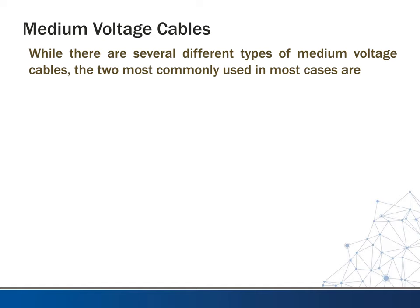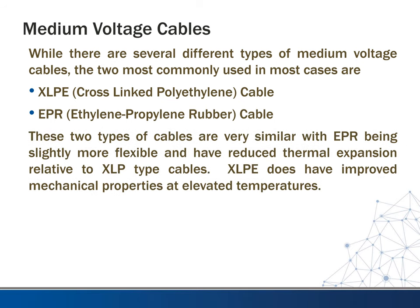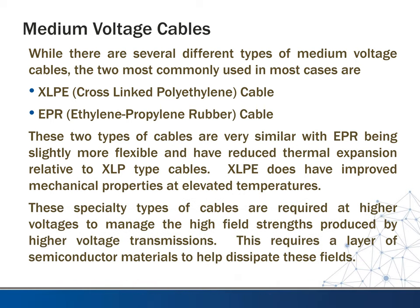I want to mention briefly medium voltage cable. This is usually outside the scope of electrical building design because we usually take it once it's stepped down to user voltage, but there may be instances where we have to do some medium voltage work. The two most commonly used types are XLP, or cross-linked polyethylene (XLPE), and EPR, which is ethylene propylene rubber cable. These two types are very similar, with EPR being slightly more flexible and having reduced thermal expansion relative to XLP. XLP does seem to have improved mechanical properties, especially at elevated temperature. Usually they are interchangeable, depending on the environment.